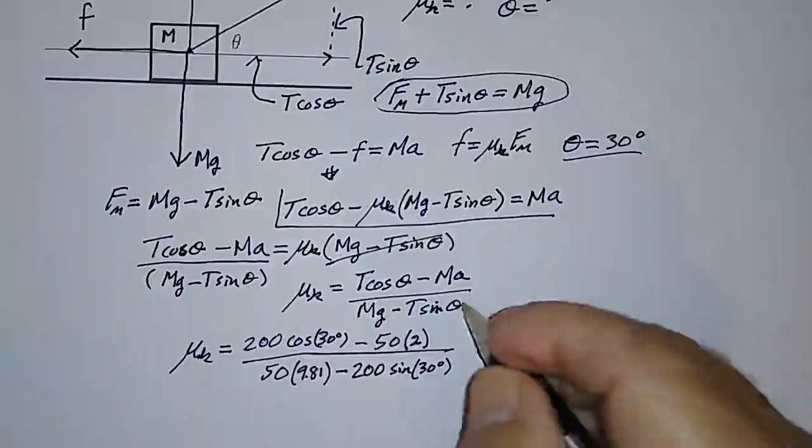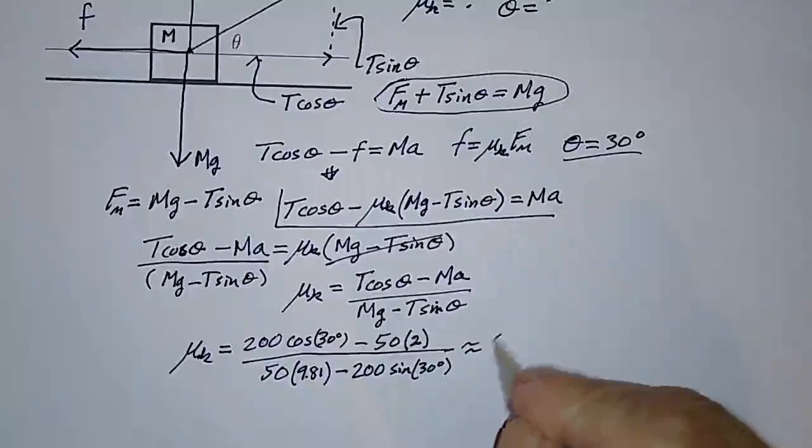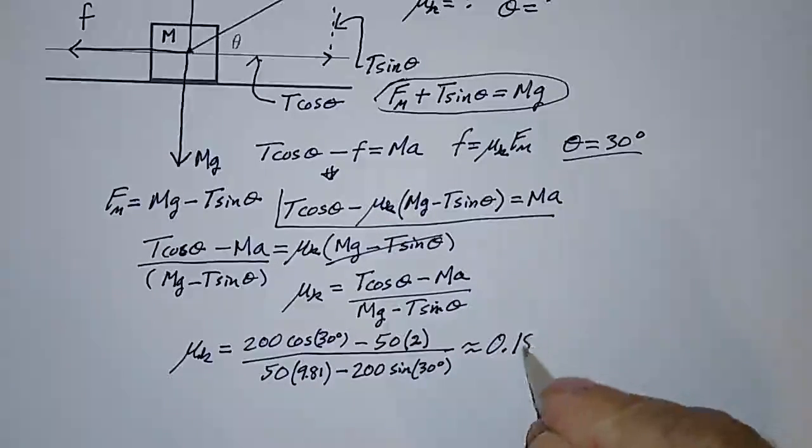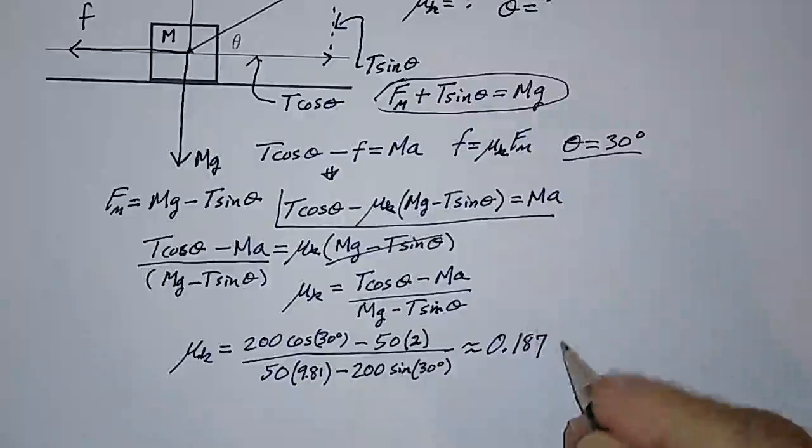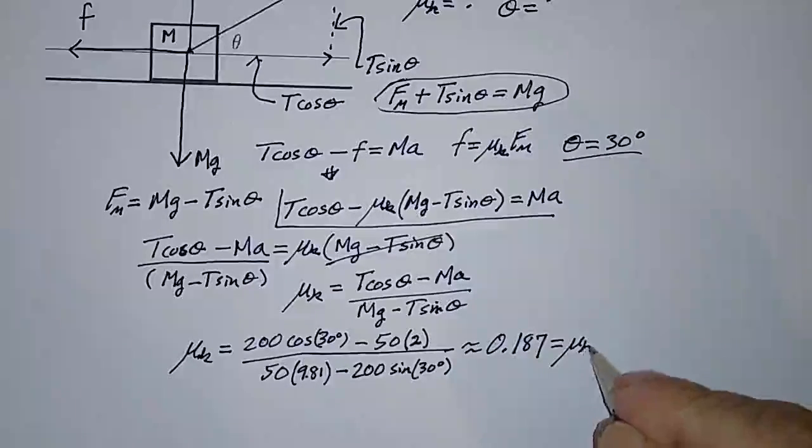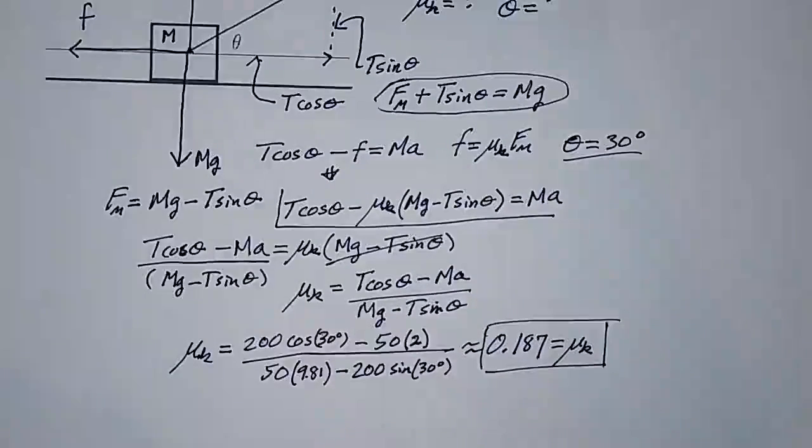And when you stuff all that into your calculator, that works out to be 0.187. That's equal to the coefficient of kinetic friction, which is what we wanted to find in the first place. And there you have it.